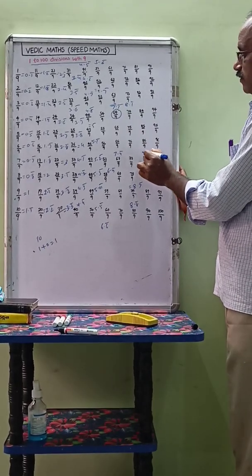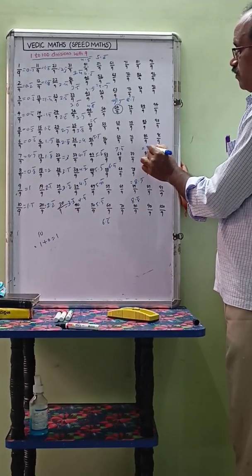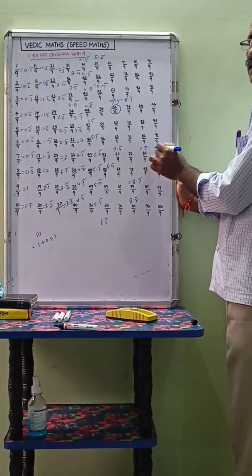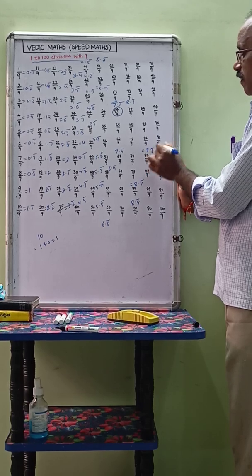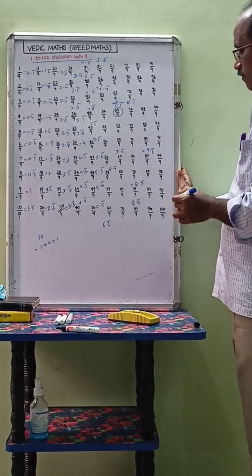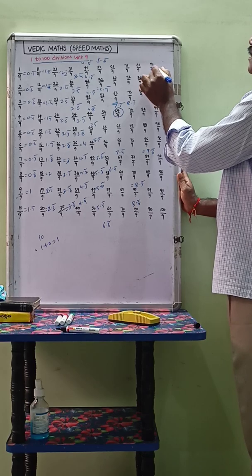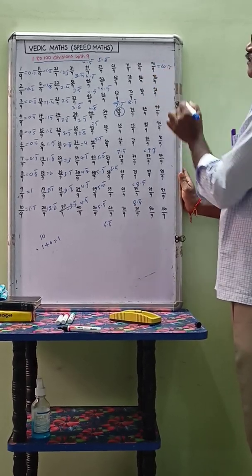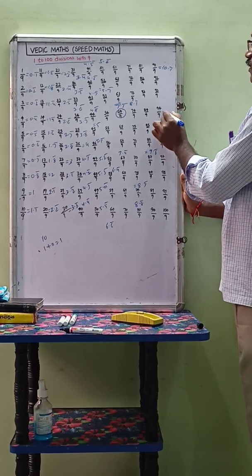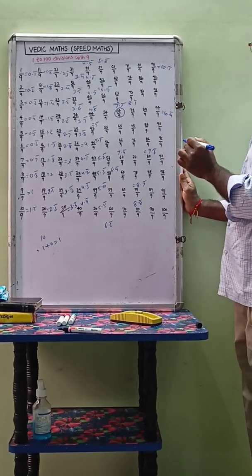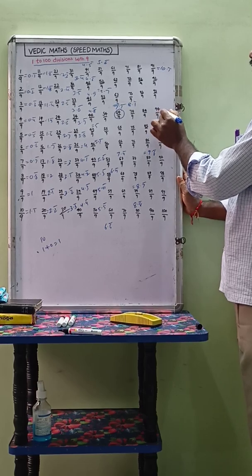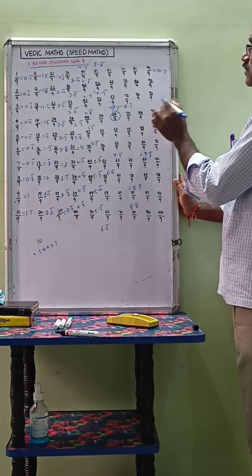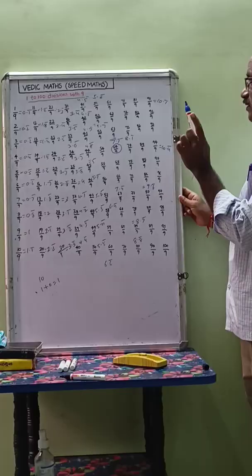87 by 9: sum of the digits — 8 plus 7 equals 15, digital sum equals 6, so 9.6 bar. 91 by 9 equals 10.1 bar, 10.4 bar — sum of the digits: 9 plus 1 plus 1 equals 4 bar.